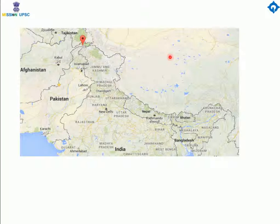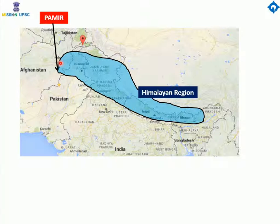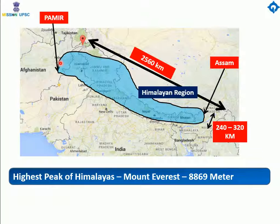The Himalayan mountains are situated on the north of India, starting from the Pamir in the extreme northwest. The mighty Himalayan range extends towards the northeast, and in the east, the Himalayas extend up to Assam. It has a length of nearly 2560 kilometers with an average breadth of 240 to 320 kilometers. The highest peak of the Himalayas is Mount Everest, with a height of 8869 meters.